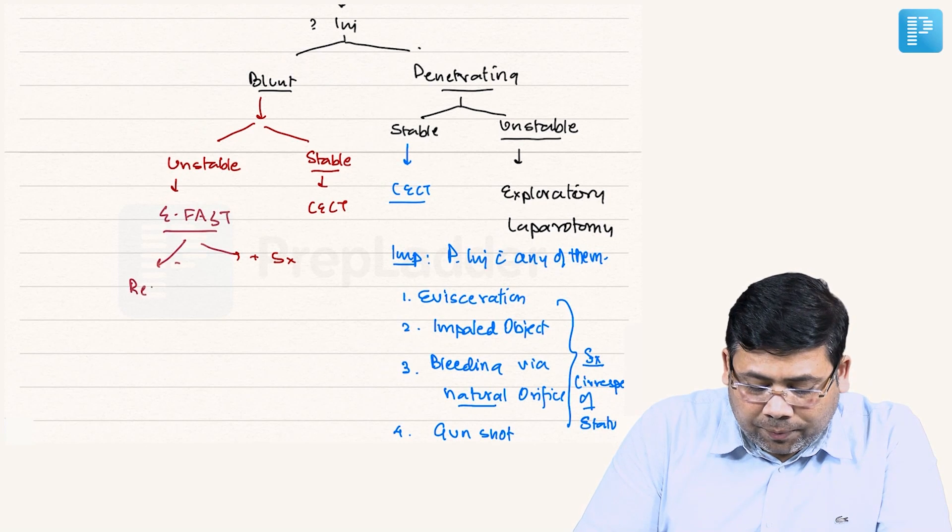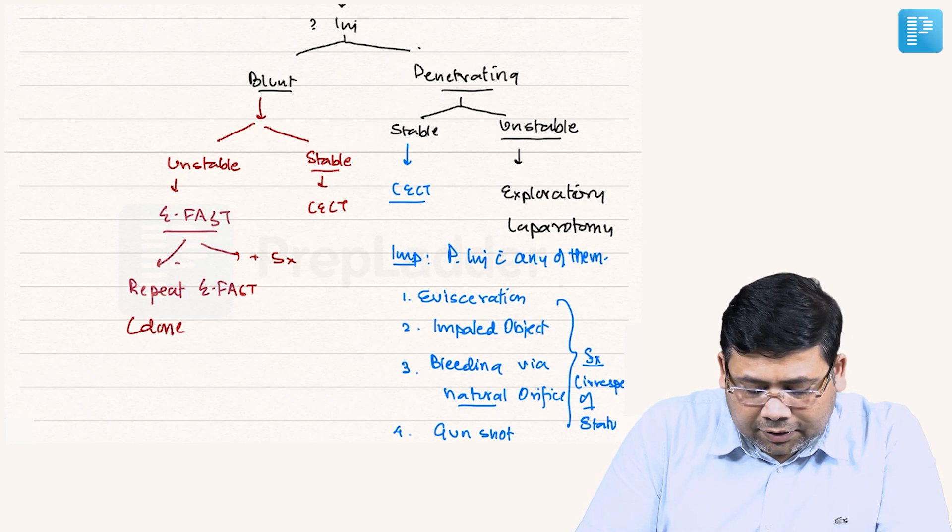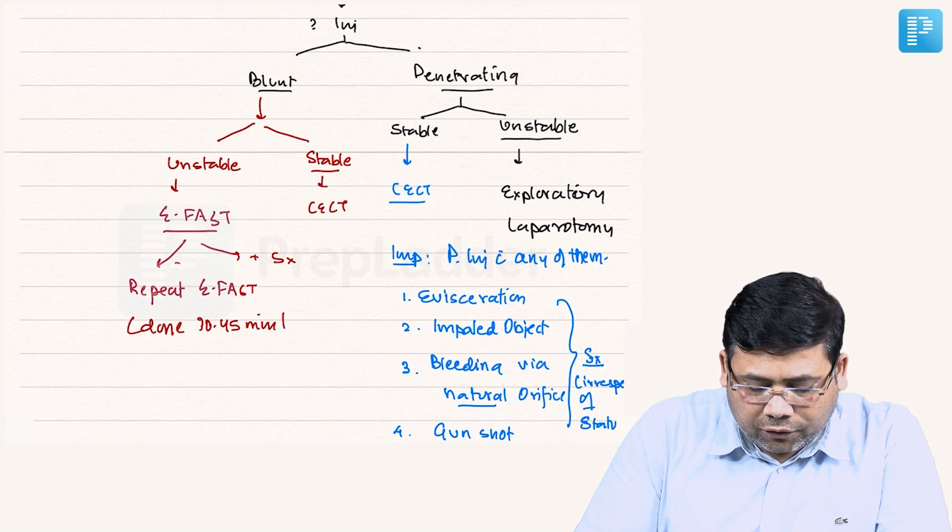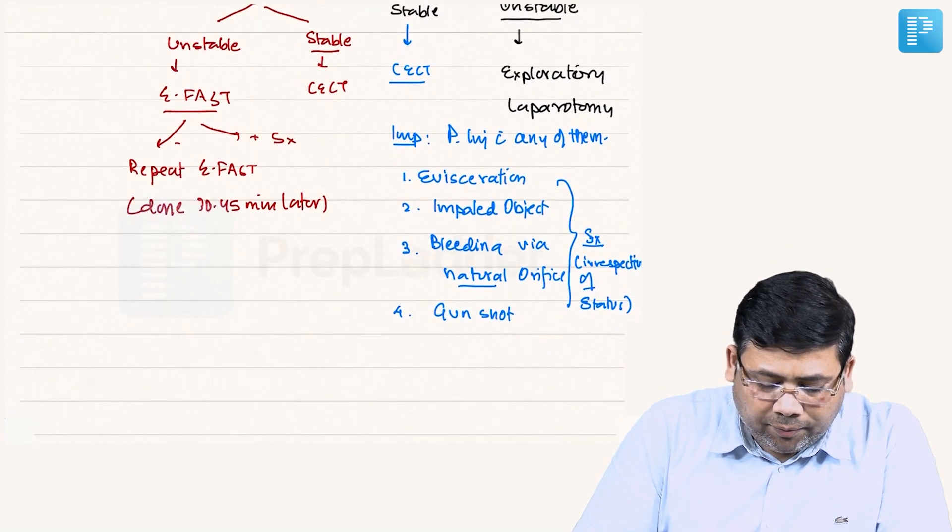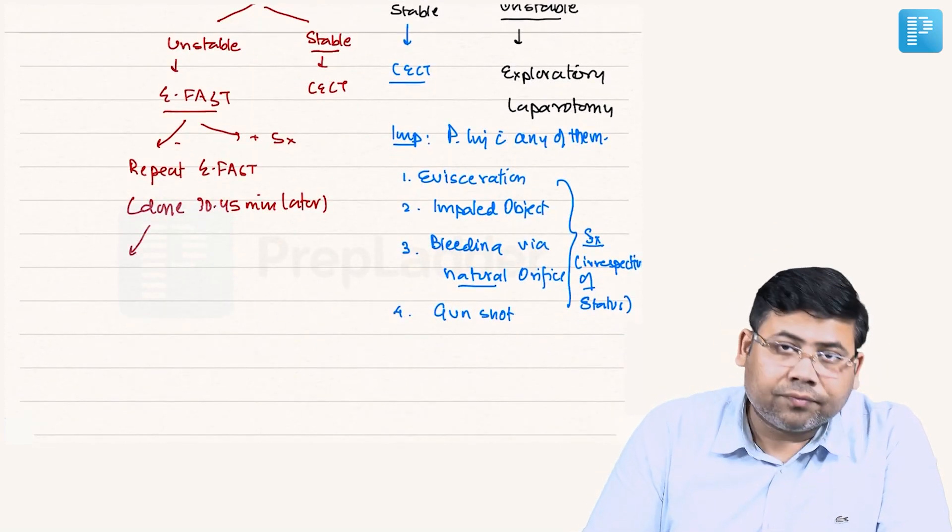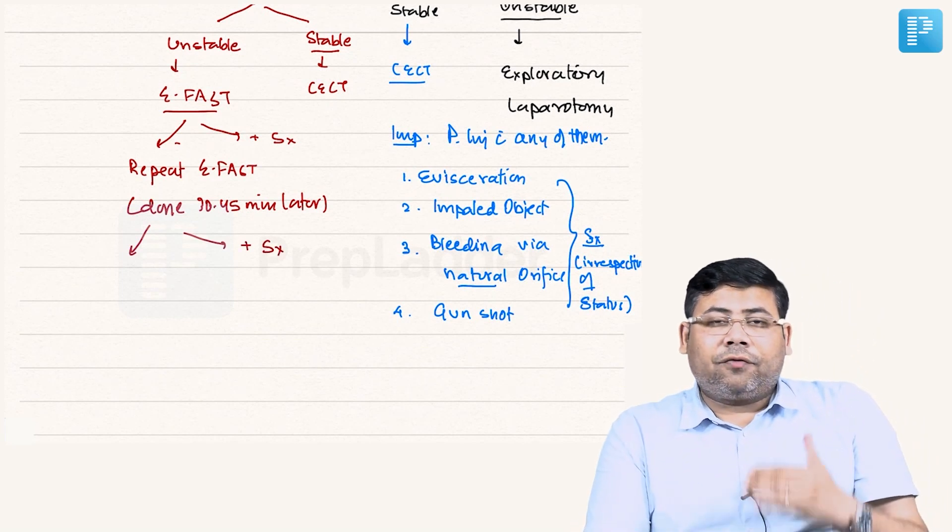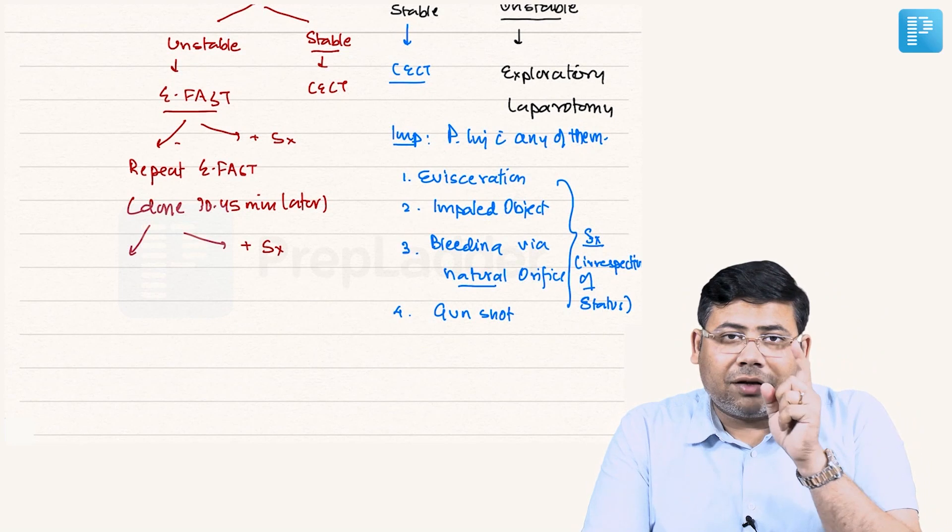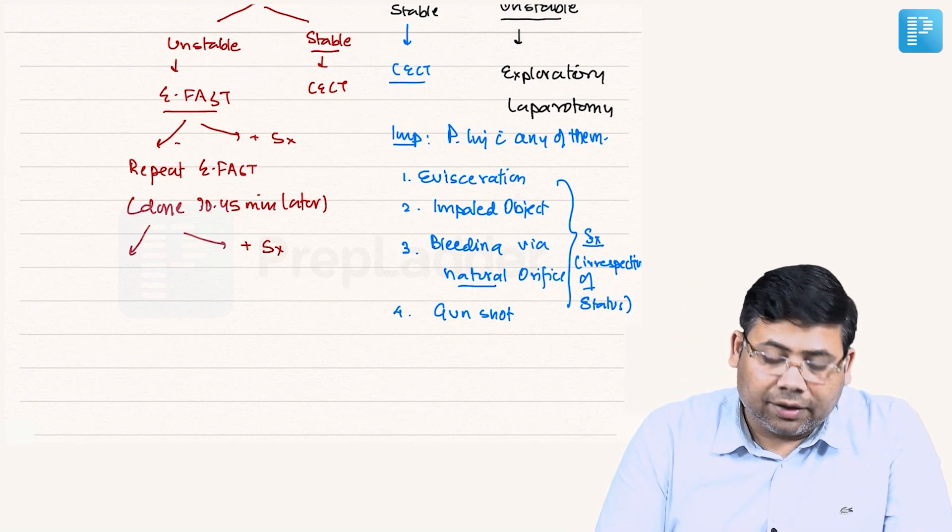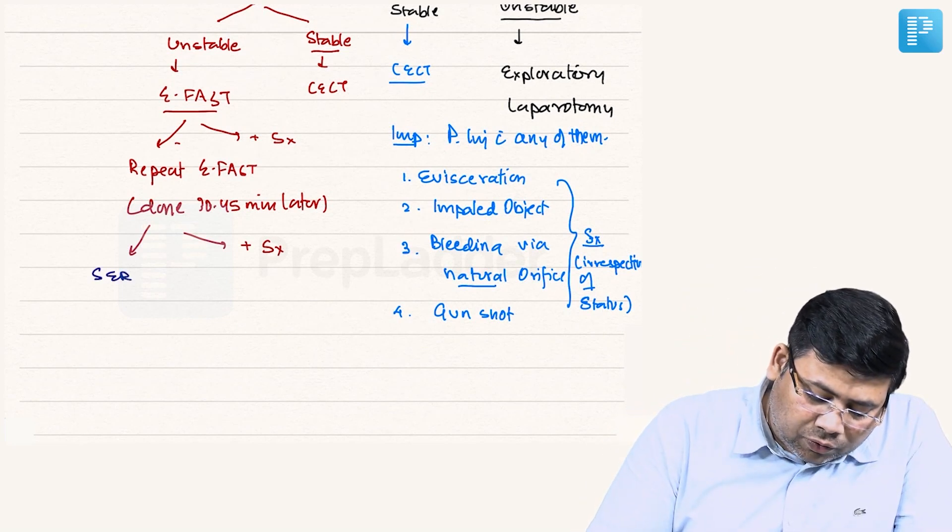Remember, when you go for repeat eFAST, when is it done? This is done 30 to 45 minutes later. And remember, if this eFAST this time is positive, you go for surgery. Now remember, if eFAST after eFAST is negative, that means you are ruling out something from the retroperitoneal angle.